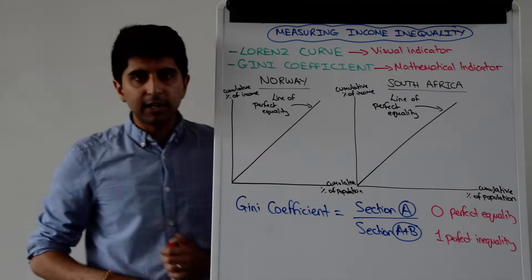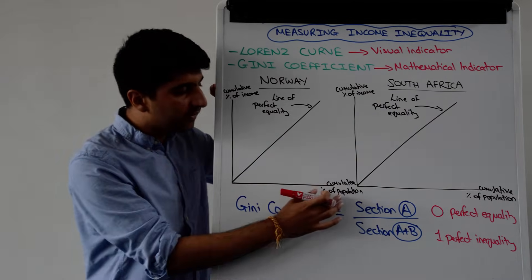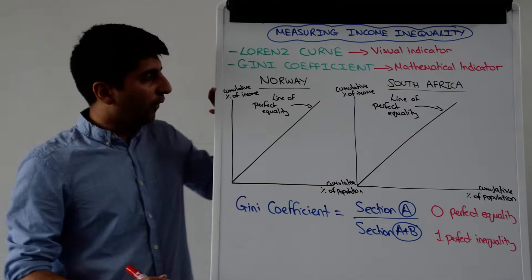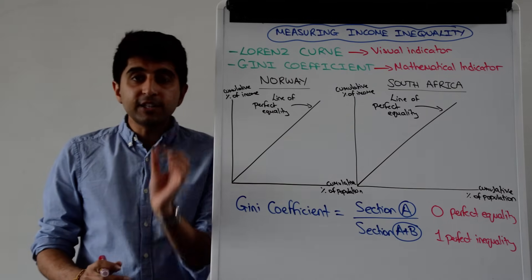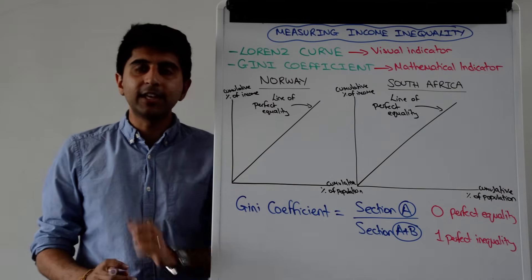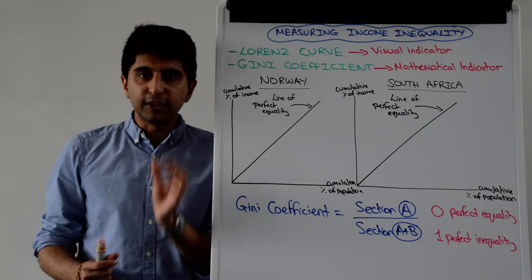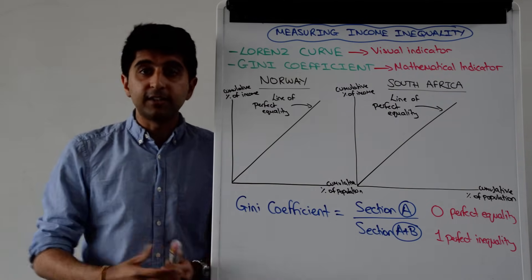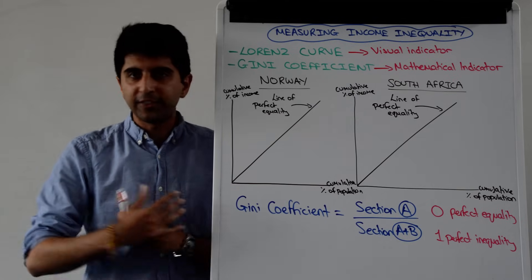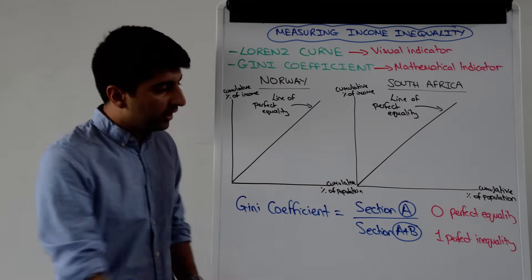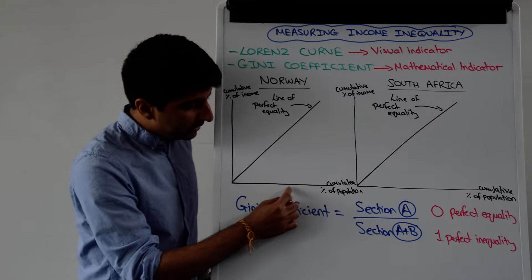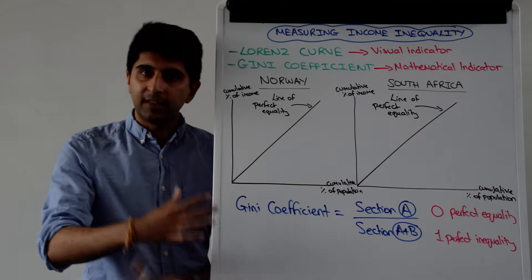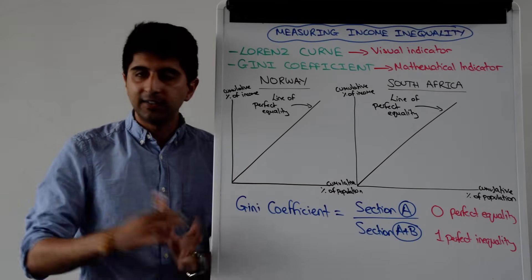When it comes to constructing Lorenz curve diagrams, it's important that you get the axes labelled perfectly. On the y-axis is always the cumulative percent of income; on the x-axis is always the cumulative percent of population, where cumulative just means up to and including. So the 50th percent of the population includes the 49% that came before it — that's all it means.